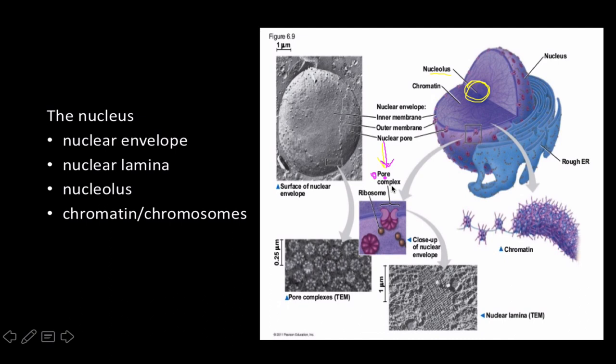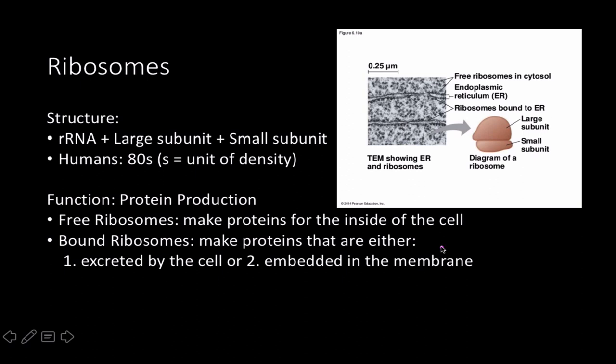The pore complex is the channel that allows things to move in — and here it's shown trafficking a ribosome, which makes sense. The mesh-like structure shown is the nuclear lamina. You can also see a distinction between the loose chromatin on the left versus the wrapped-up chromosome form.